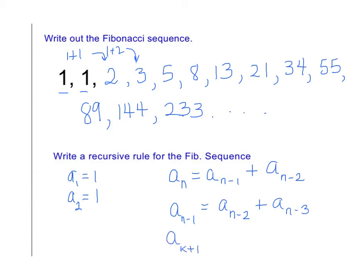because it doesn't really matter if it's n or k or i or j, whatever variable that is, then the one previous to that is a sub k. And the one previous to that one is a sub k minus 1.